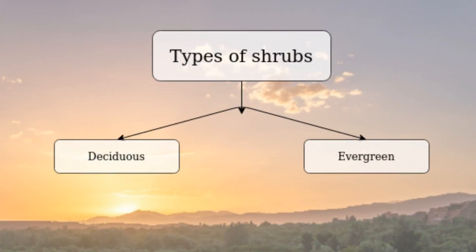A garden dedicated mainly to shrubs is called a shrubbery, just as a garden of vines is called a vineyard. Shrubs are categorized into two types: deciduous shrubs, which shed their leaves seasonally and grow new ones each season, and evergreen shrubs, which maintain green foliage throughout the year. These are the two types of shrubs found in India.